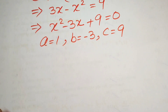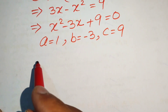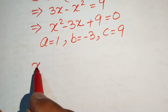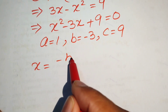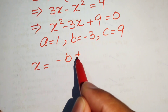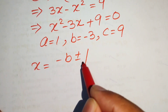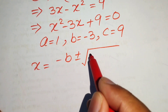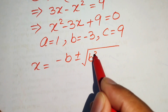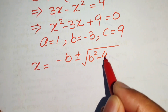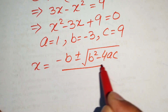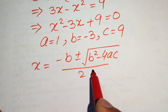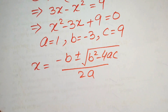We apply the quadratic formula: x equals minus b plus or minus the square root of b squared minus 4ac, all divided by 2a.